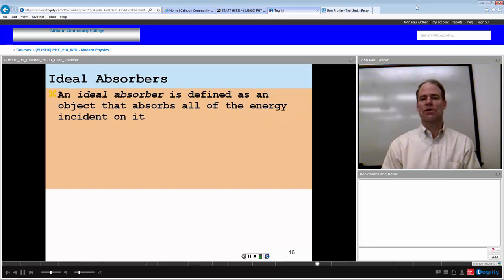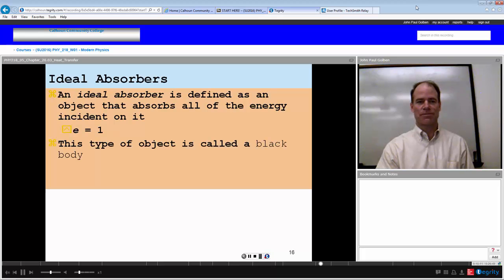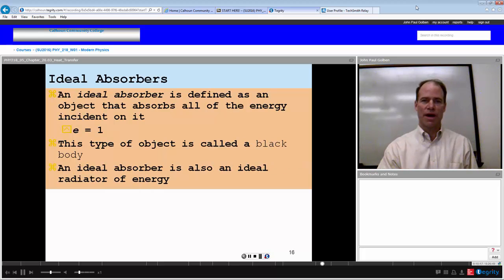An ideal absorber is defined as an object that absorbs all the energy incident on it. Emissivity in this case would be equal to 1 because emissivity and the absorptivity are the same. This type of object that absorbs everything is called a black body and it's also emitting at the same emissivity as well. An ideal absorber is also an ideal radiator of energy.